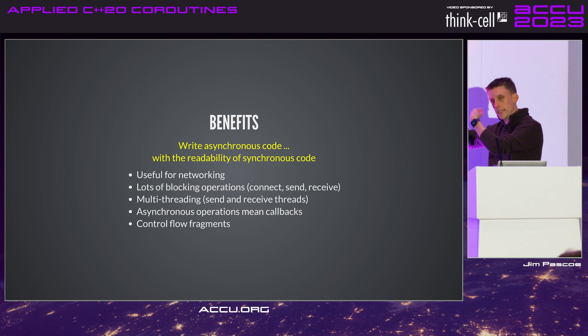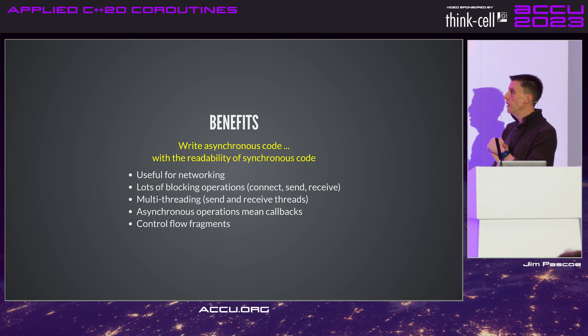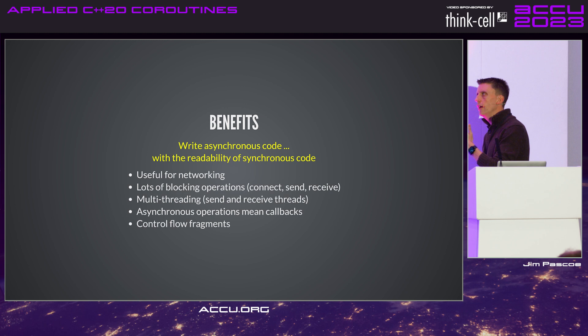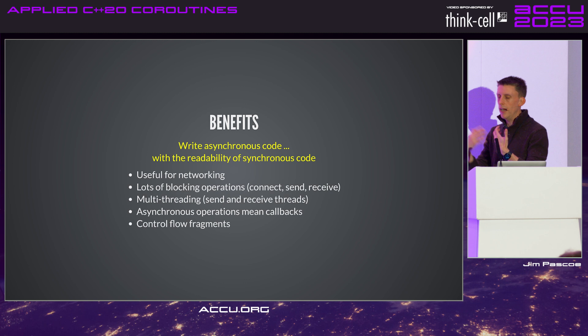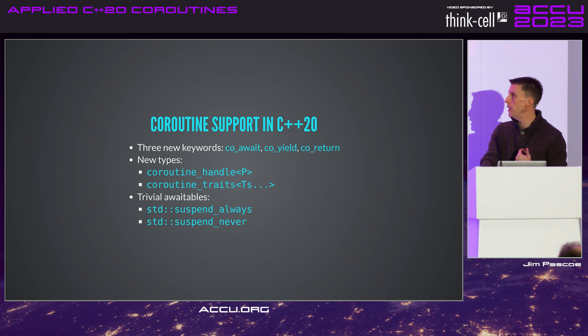Coroutines are really useful for networking, with lots of blocking operations — connect, send, receive. If you combine asynchronous callbacks with multi-threading, it gets very complex: control flow fragments and you end up with really tricky bugs. What C++20 gives us: three new keywords — co_await, co_yield, and co_return. The star of the show is really co_await, because that's what does the suspension and resumption.